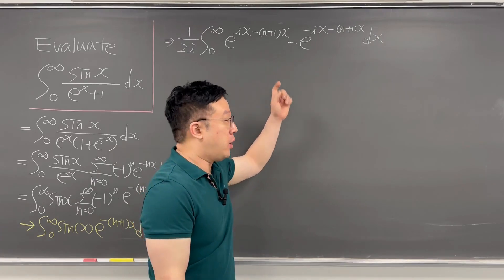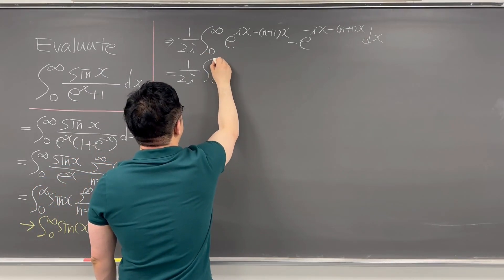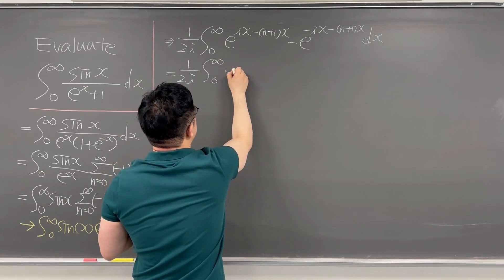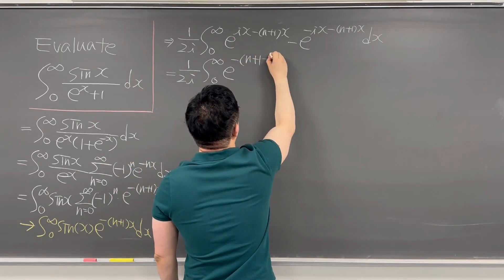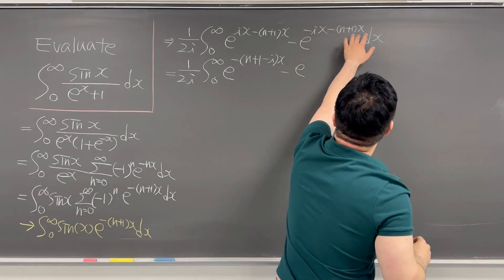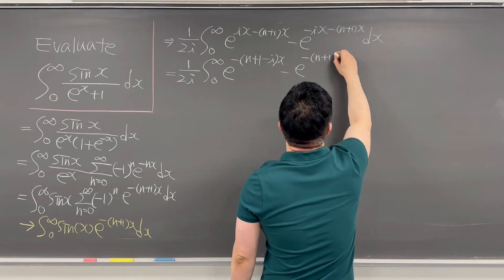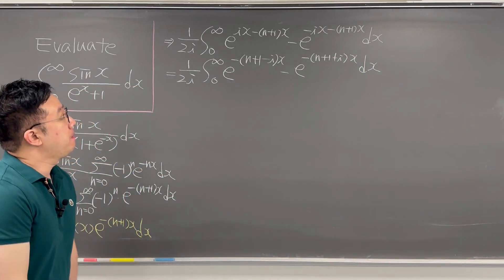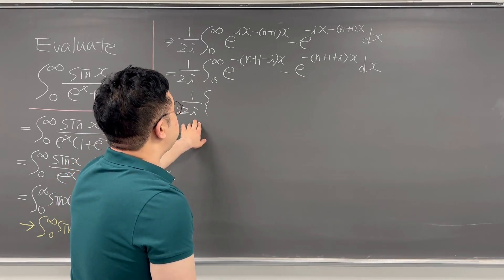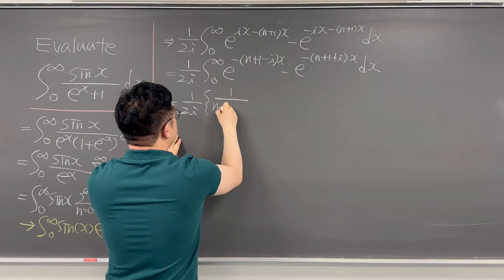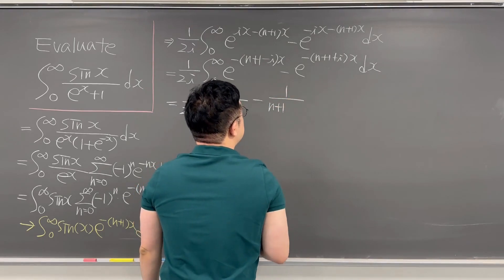So if you keep rewriting this integral, it should be the same as 1 over 2i, times the integral from 0 to infinity. Combining the exponents, the first term is e to the power of negative parenthesis n plus 1 minus i, times x, minus the second term, e to the power of negative parenthesis n plus 1 plus i, times x, and dx. We can easily evaluate this, so it is 1 over 2i times 1 over n plus 1 minus i, minus 1 over n plus 1 plus i.